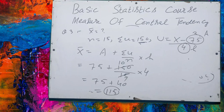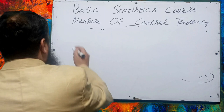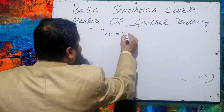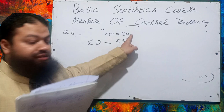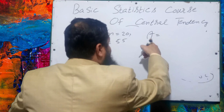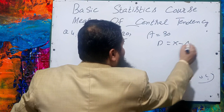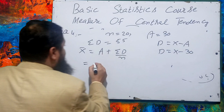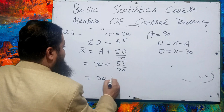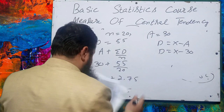Question number 4: the sum of deviations of 20 values from 30 is 55, meaning n = 20, summation d = 55, and a = 30, where d = x − a = x − 30. Using the formula x̄ = a + (summation d / n): x̄ = 30 + (55/20) = 30 + 2.75 = 32.75. That is the correct option in the exam.